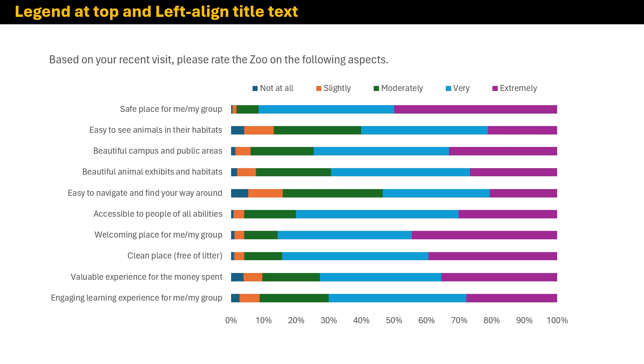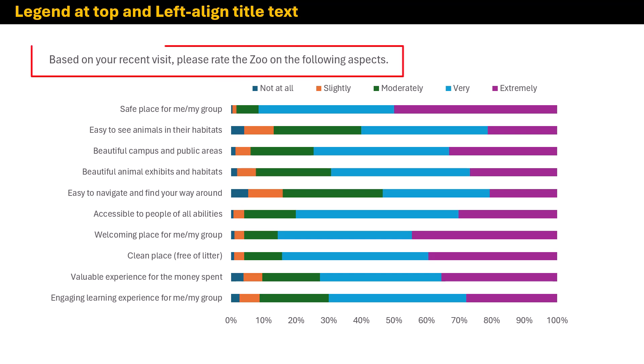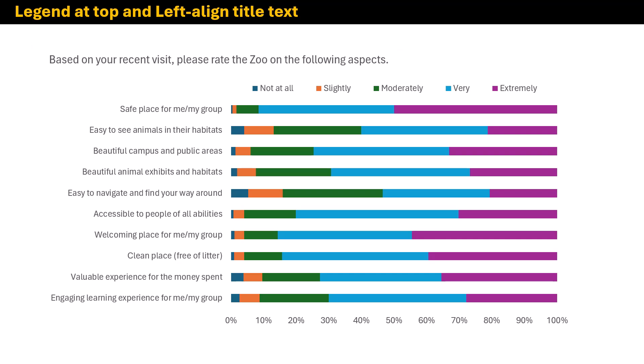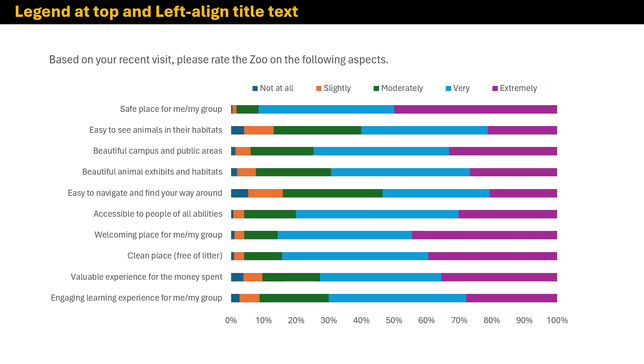The next thing we're going to do is make sure the chart title is in the upper left-hand corner and left-aligned. We don't want it centered — Excel and PowerPoint always default to center. We're also going to move the legend to the top of the chart instead of the bottom, because readers' eyes move top to bottom and I don't want them zigging and zagging between the legend and the chart.